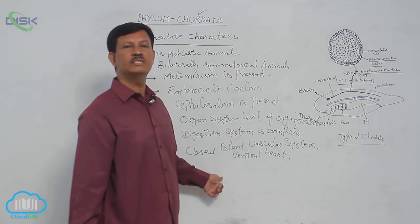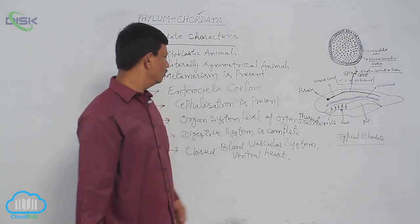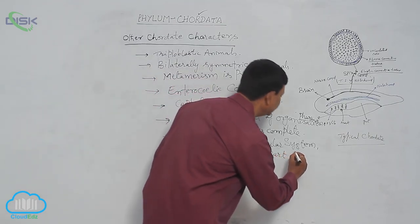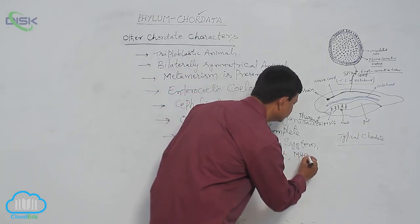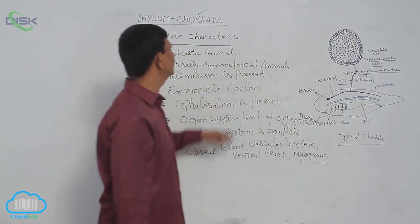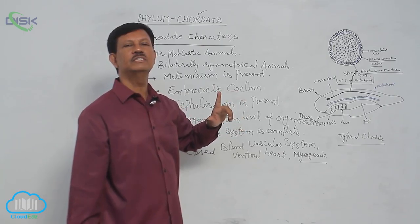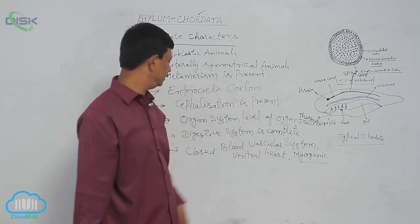In non-chordata, the heart is situated on the dorsal side, but in all chordates the heart is situated on the ventral side and it is a myogenic heart. Myogenic heart is present in chordates, but in non-chordata the heart is neurogenic, not myogenic.